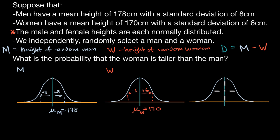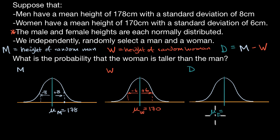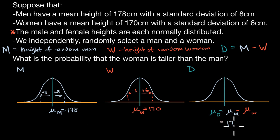Now let's think about the difference — the random variable D. The mean of D is going to be equal to the difference in the means of these random variables: the mean of M minus the mean of W. That is 178 centimeters minus 170 centimeters, which equals eight centimeters. So the mean of D is eight.